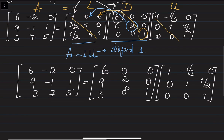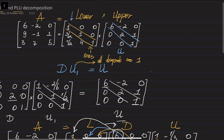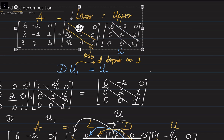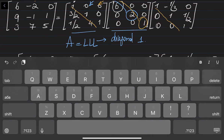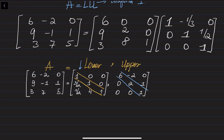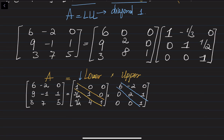So now all entries of the U matrix have ones on the diagonal. You can see the difference: in the original form, the L matrix had ones on the diagonal; here, the U matrix has ones on the diagonal.